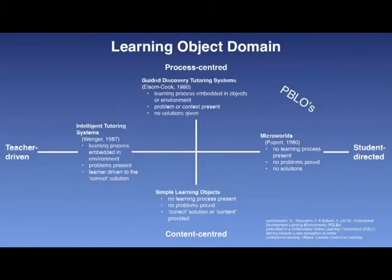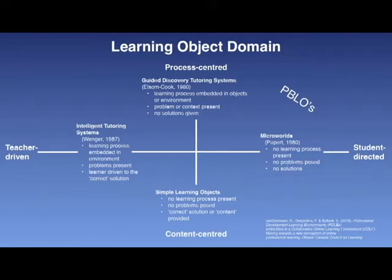This slide is a repeat of the initial slide from the last video clip, repeated here to provide context for the ongoing discussion regarding the learning object landscape or domain. Learning objects can be found in a wide variety of shapes and sizes, typically characterized as small reusable digital learning resources which support learning. The definition also includes larger environments designed for similar purposes. Learning objects can be classified on a grid created by the intersection of two constructs, as shown in the graphic displayed on this slide.